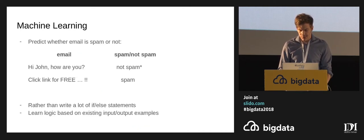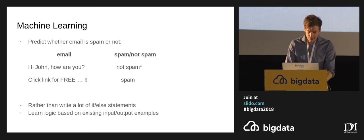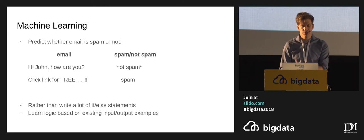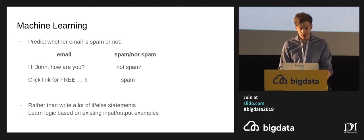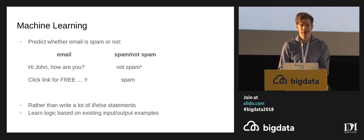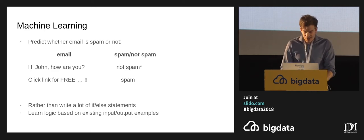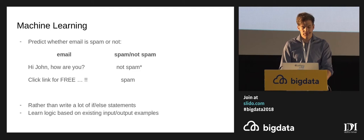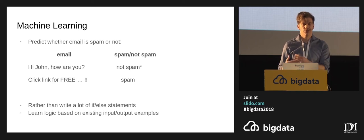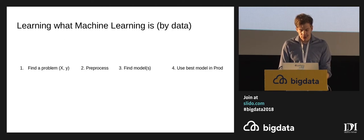Another example using text data: you have text as input and you're predicting whether it's spam or not. For example, 'Hi John, how are you' — we'd probably say that's not spam. 'Click link for free' might be spam. Rather than writing a lot of if-else statements, you'd prefer a model to do this for you. So you learn the logic based on your existing input and output, and it will assign different weights and importances to your input.